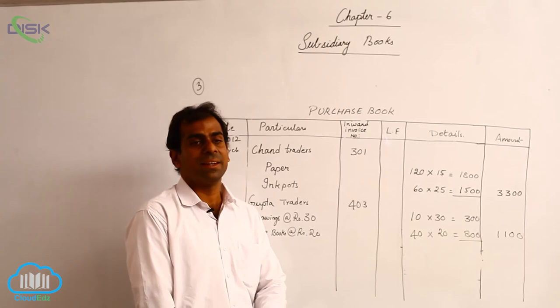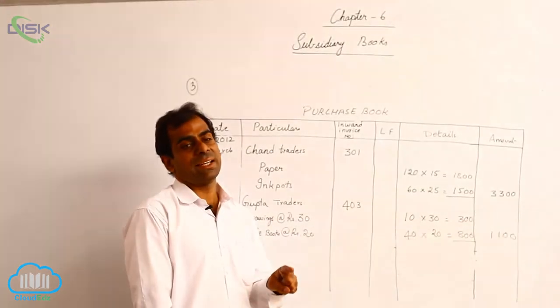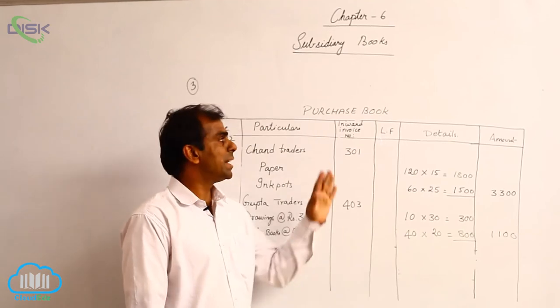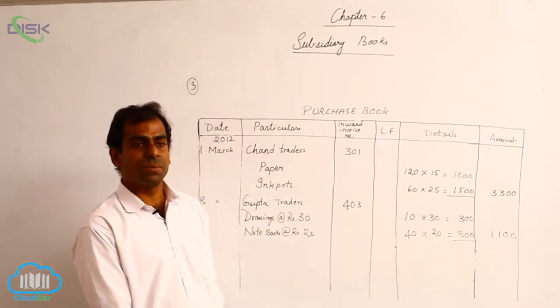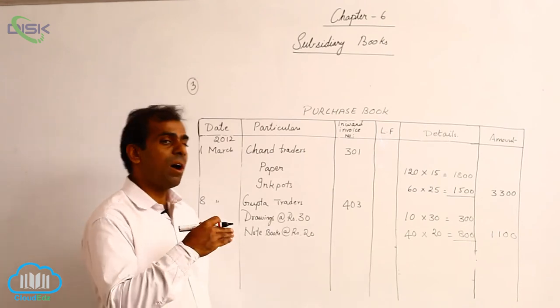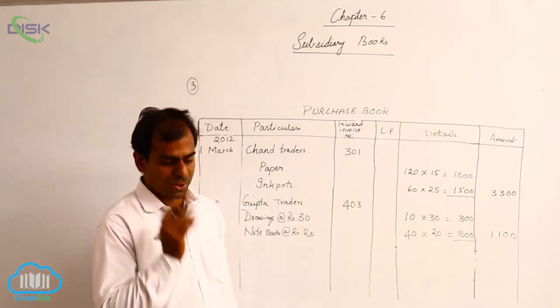It is clearly stated goods are purchased for cash. Being a cash transaction, it will not come in the purchases book, even though it is a purchase of goods. It will be recorded in which book? It will be recorded in the cash book.